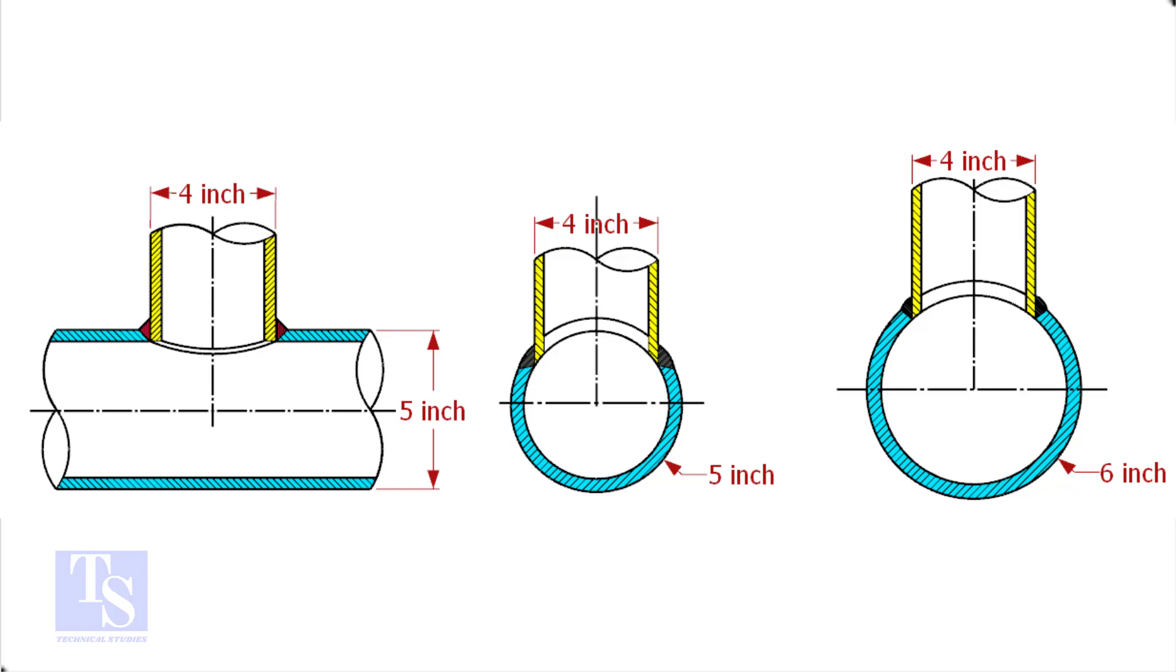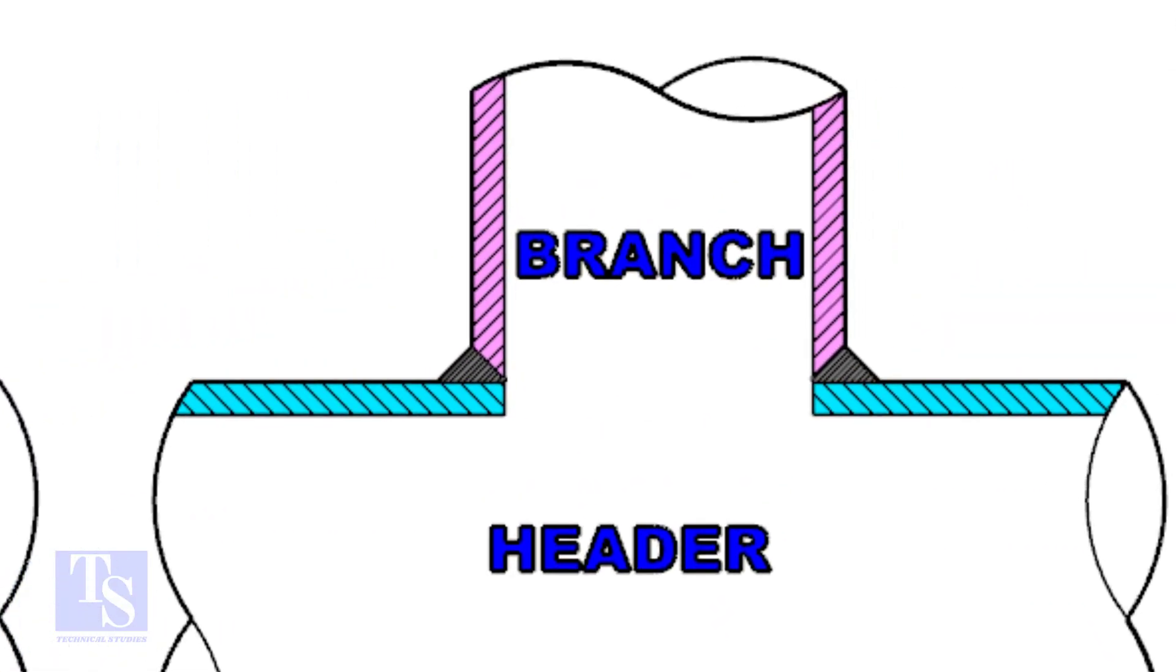Watch the section side view carefully. Check the stub-on view. The branch pipe sits on the header.